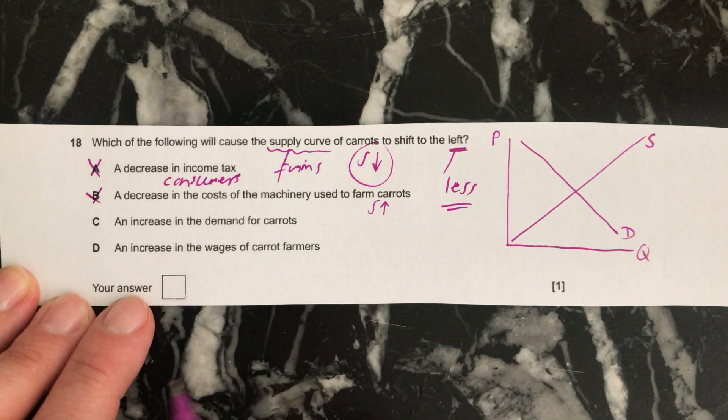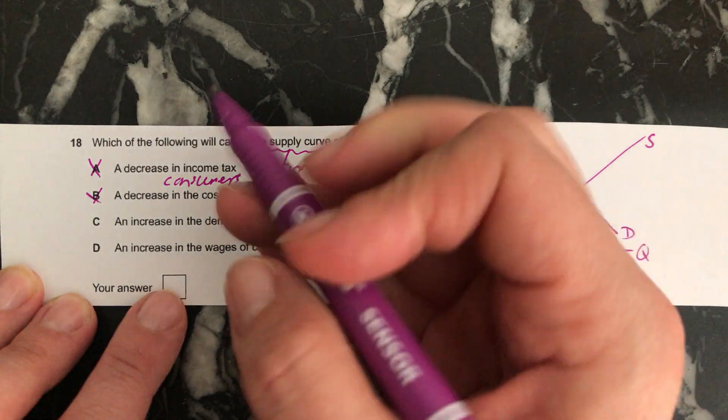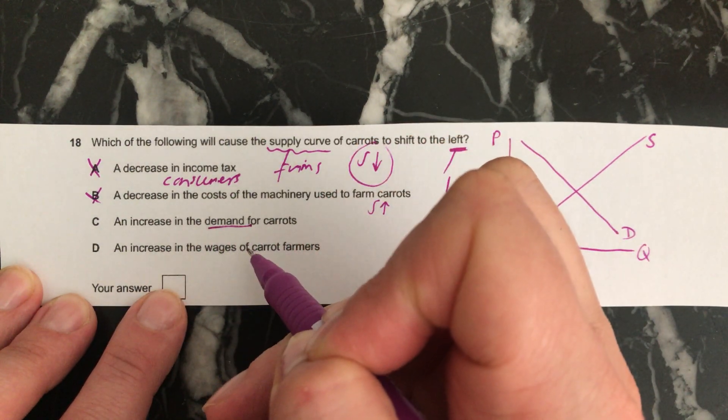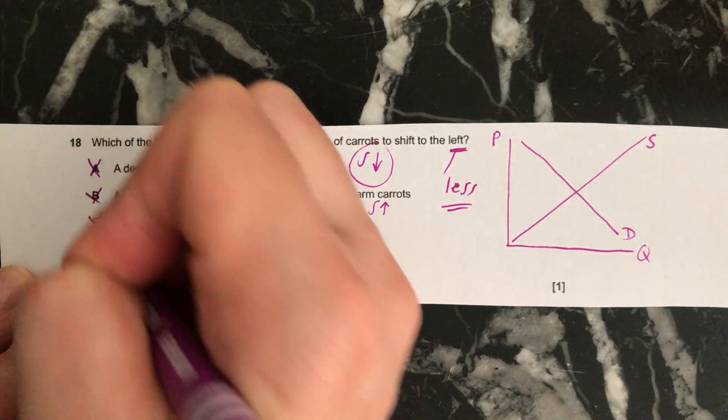The third one, an increase in the demand for carrots. Again, this is about demand. It's not about supply. So that's wrong as well.